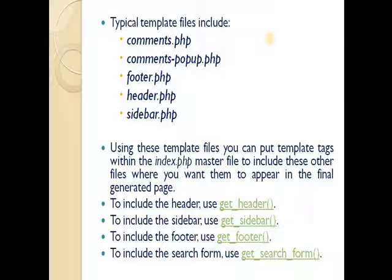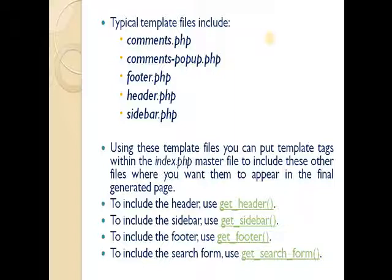WordPress is open source. When you use the get_header() function, it will include the header.php file — similar to using PHP include, include_once, require, or require_once — but instead of including the file directly, it uses the function. Likewise for get_sidebar(), get_footer(), and get_search_form().